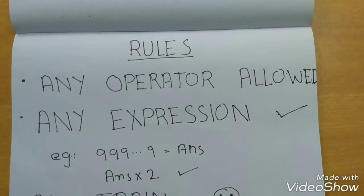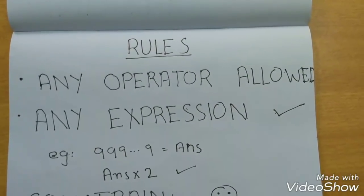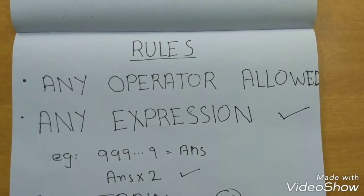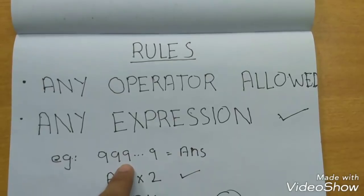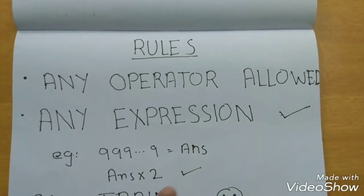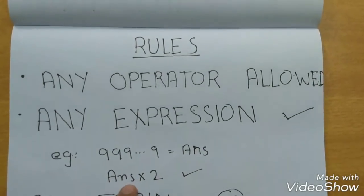Second one being, any expression which can be written on a scientific calculator is also valid. For example, you can compute a large number like this and call it as answer and answer into 2 is also a valid expression.